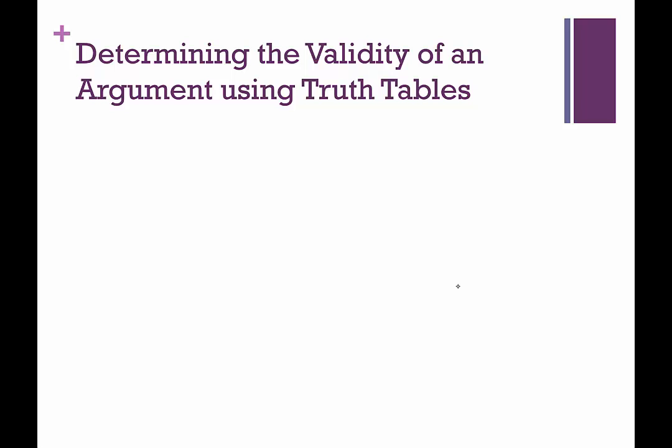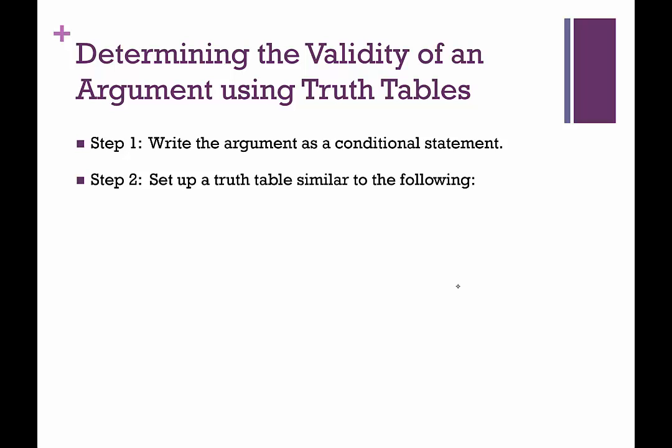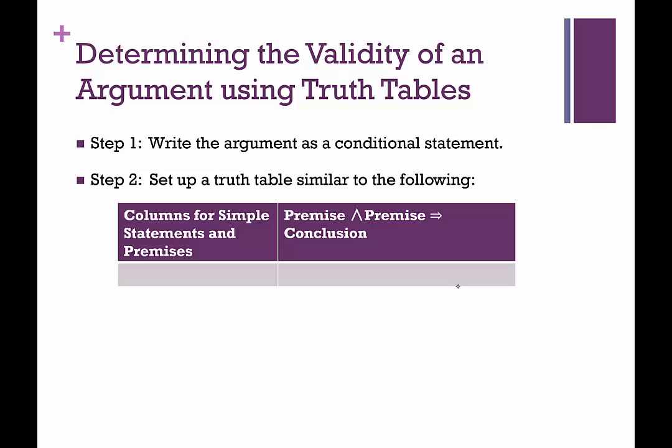So how do we determine the validity of an argument using truth tables? Here's my step-by-step suggestions. Step one: write the argument as a conditional statement. We'll talk more about that on the next slide. Step two: set up a truth table similar to the following. We've done truth tables before. We always start with the simple statements — that's P, Q, P, Q, R, whatever we have. Then we talk about any negations, then any compound statements we might have.